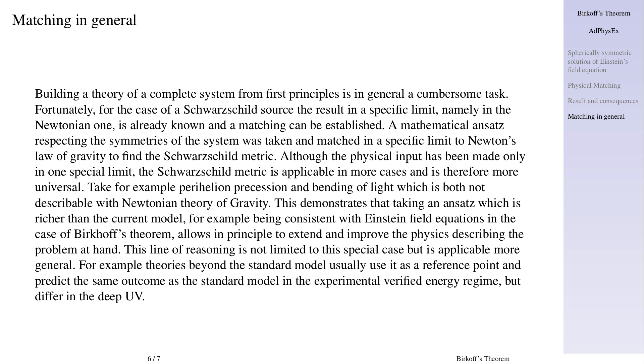Matching in general. Building a theory of a complete system from first principles is in general a cumbersome task. Fortunately, for the case of a Schwarzschild source the result in a specific limit, namely in the Newtonian one, is already known and a matching can be established. A mathematical ansatz respecting the symmetries of the system was taken and matched in a specific limit to Newton's law of gravity to find the Schwarzschild metric. Although the physical input has been made only in one special limit, the Schwarzschild metric is applicable in more cases and is therefore more universal.